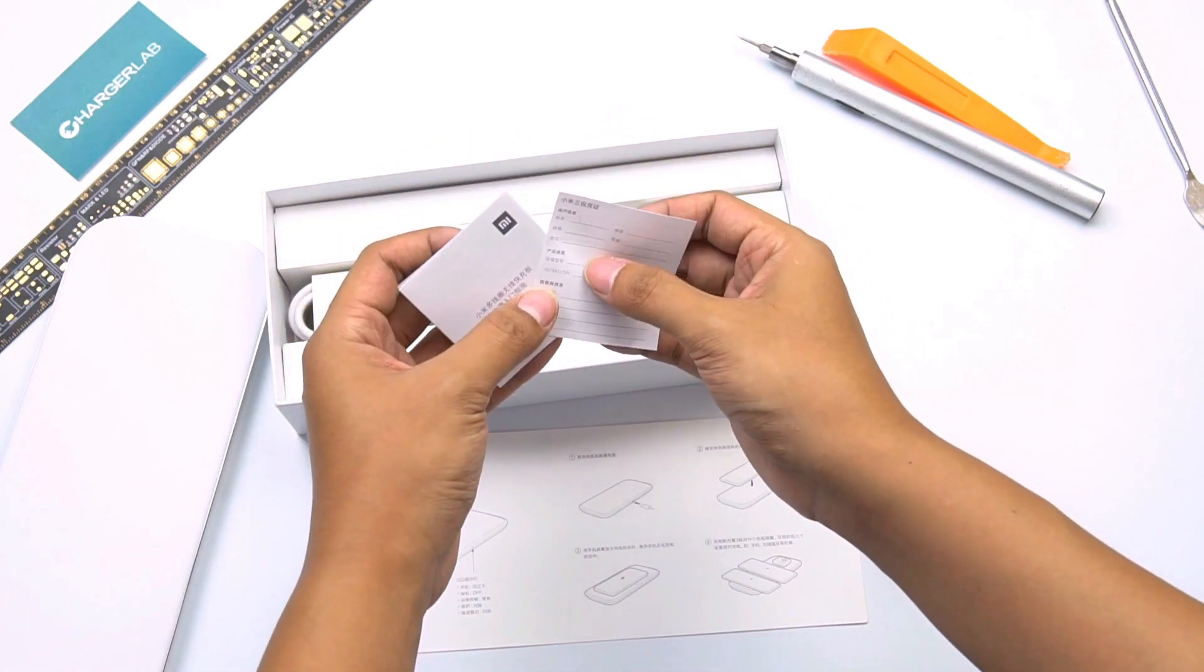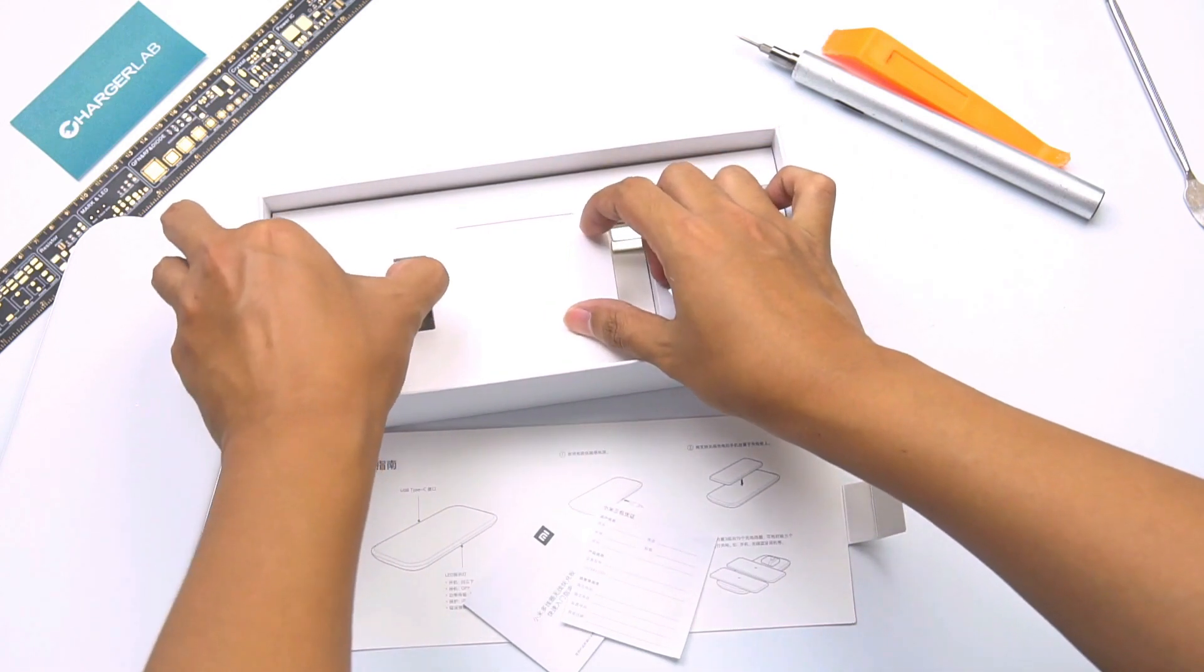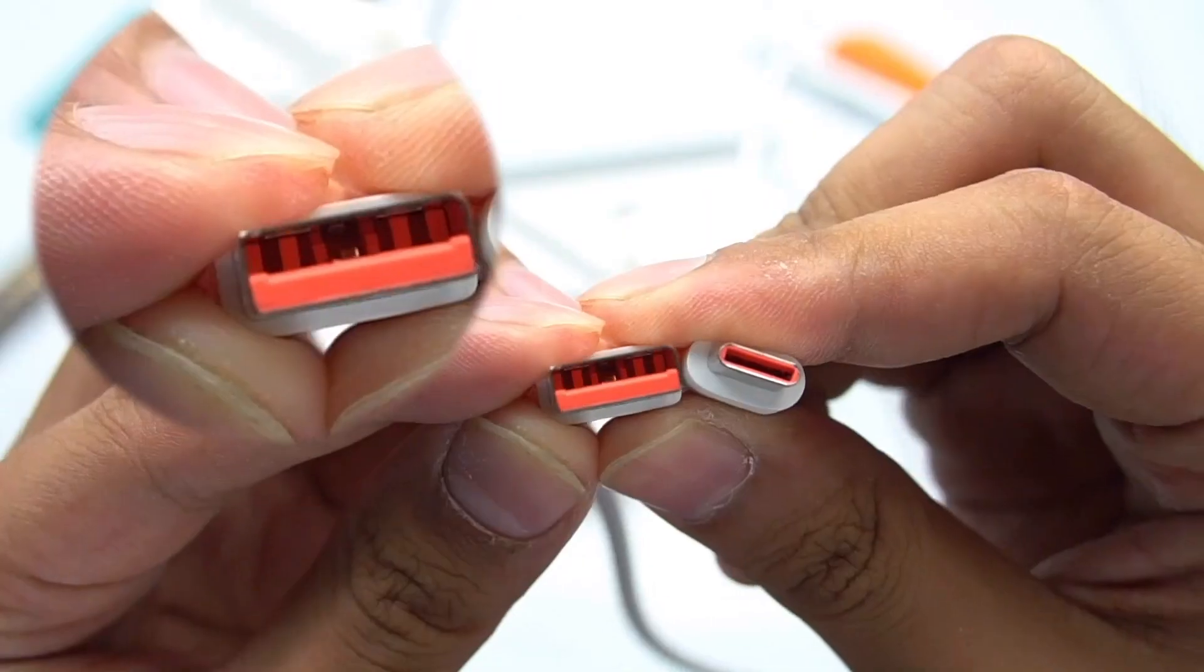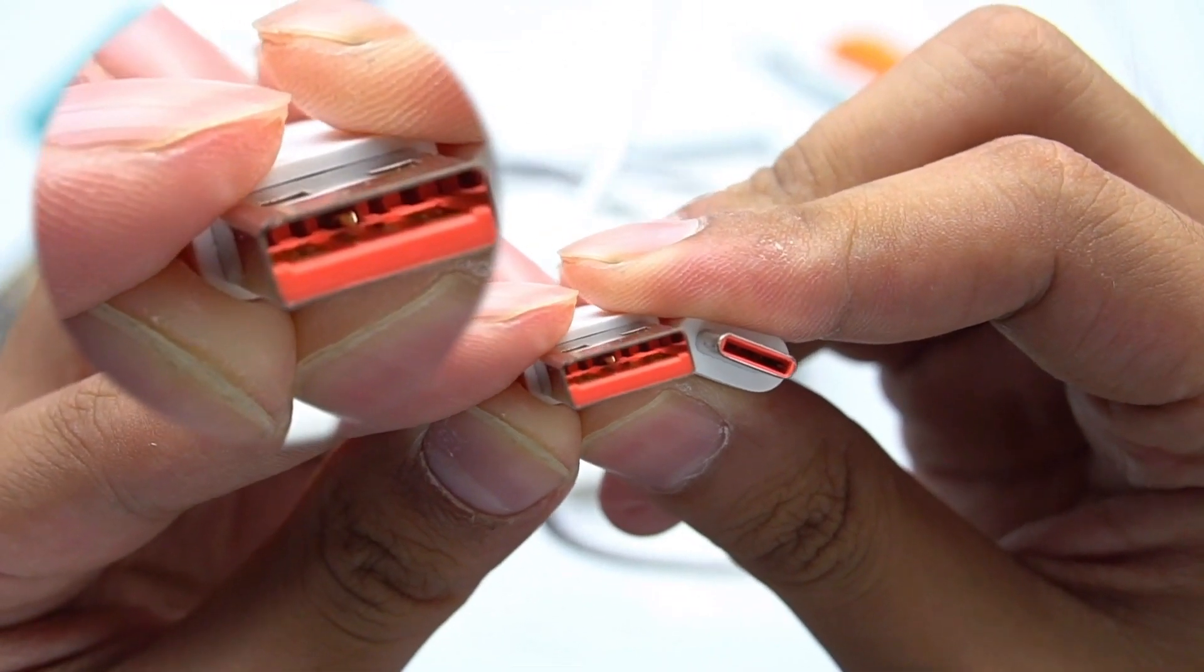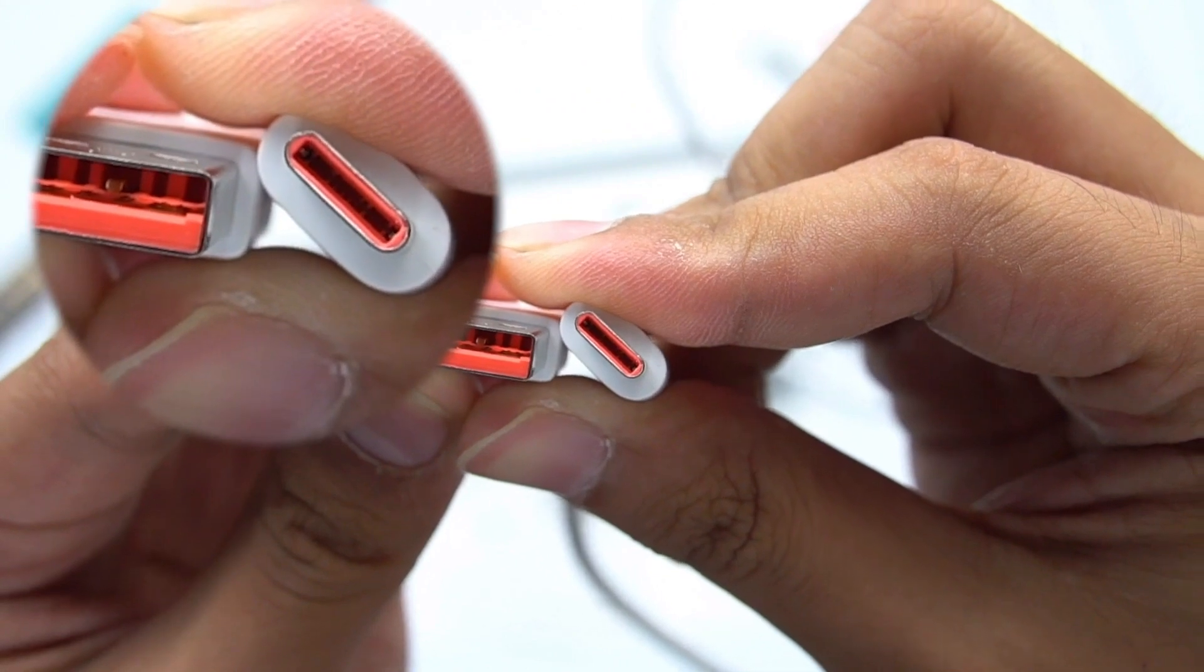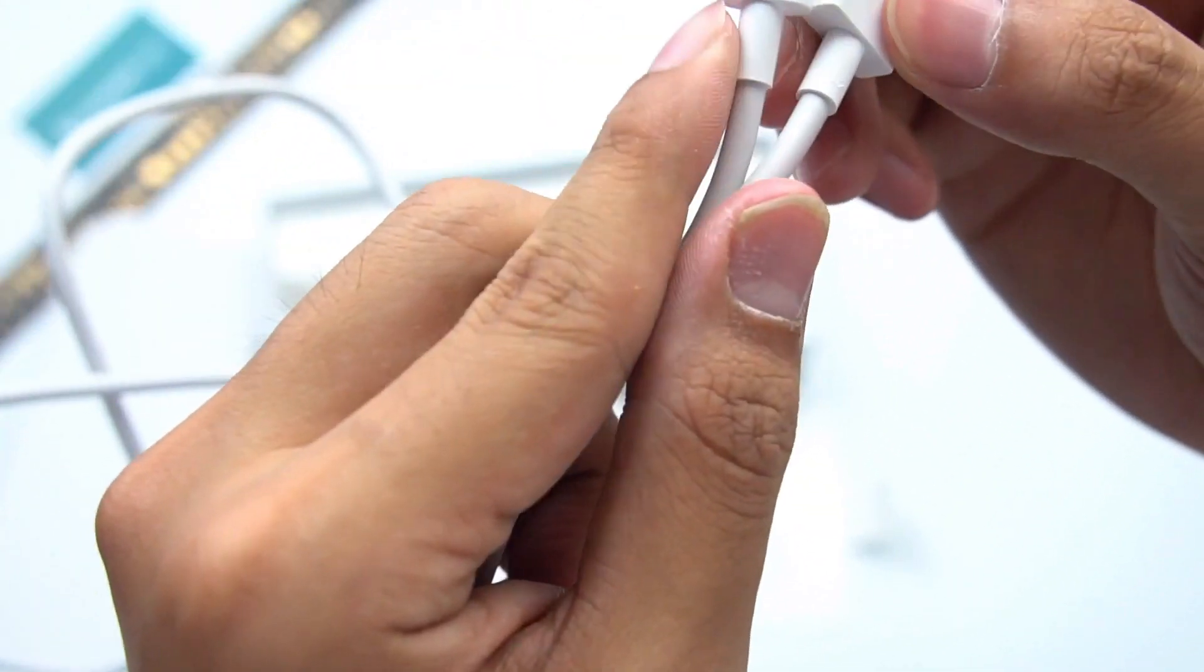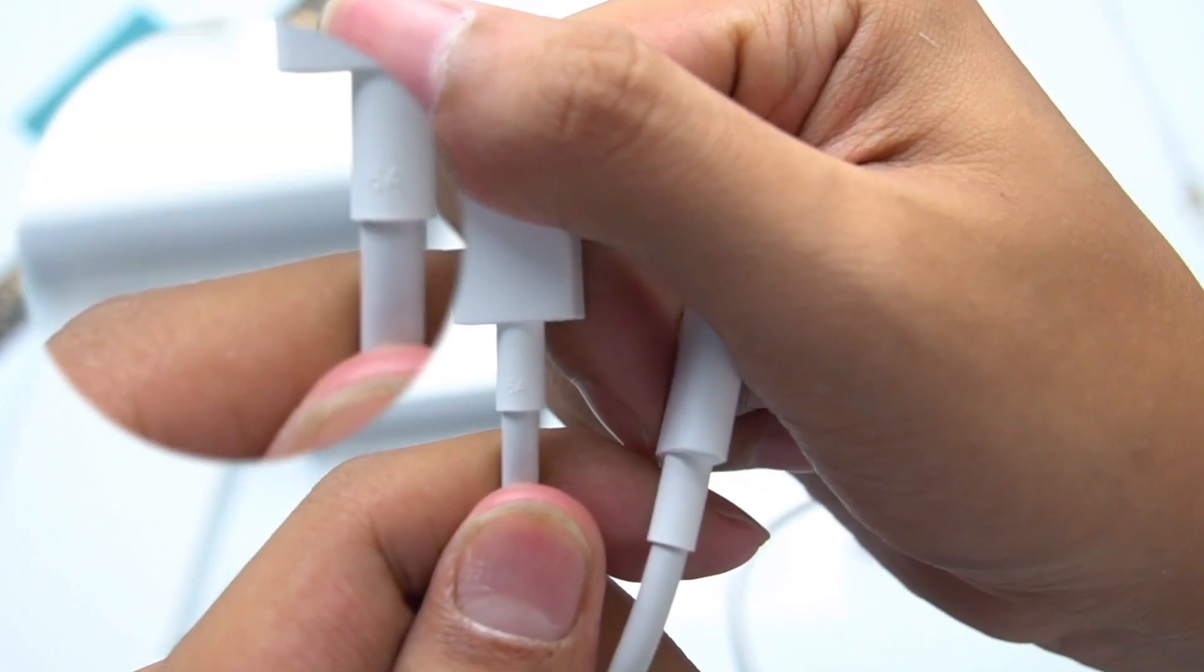And next will be the warranty certificate and detailed instructions. And here is the cable. There is a special contact point in USB-A port, which can let us know it's a special USB-A port. Only this way it can support Xiaomi's own protocol. There is another 6A mark in here.